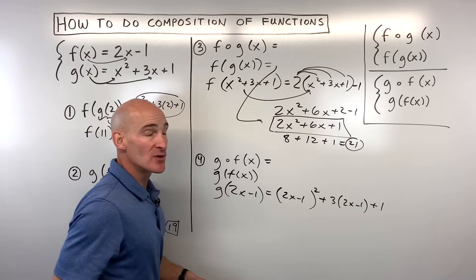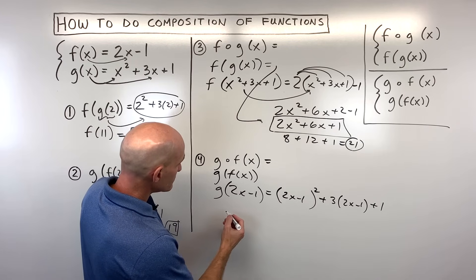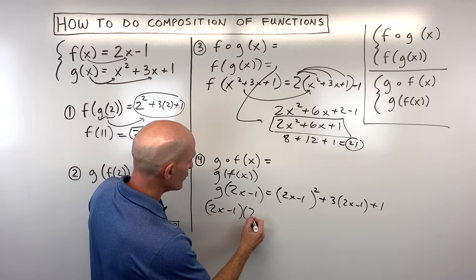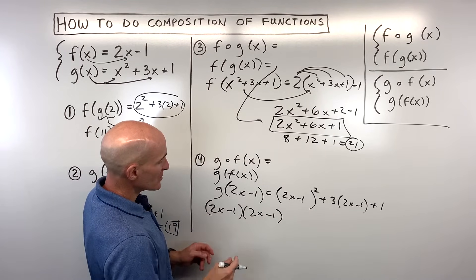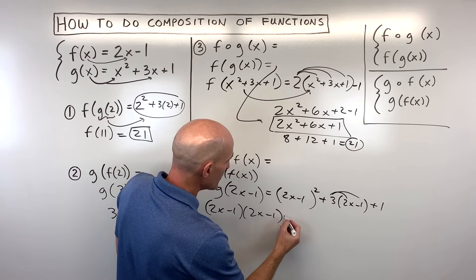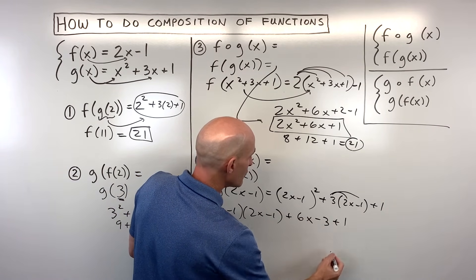Now all we have to do is just a little bit of arithmetic. 2x minus 1 times 2x minus 1. If you foil that out, let's actually write it out twice because sometimes this is a little confusing for students. So it's a binomial times a binomial here. We can just distribute the 3 so that's going to give us 6x minus 3 plus 1.